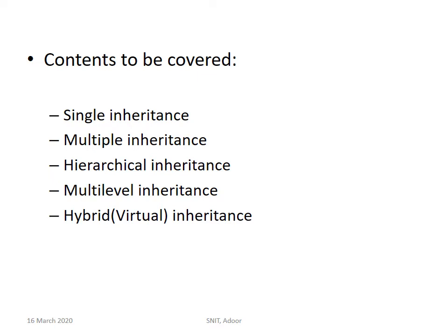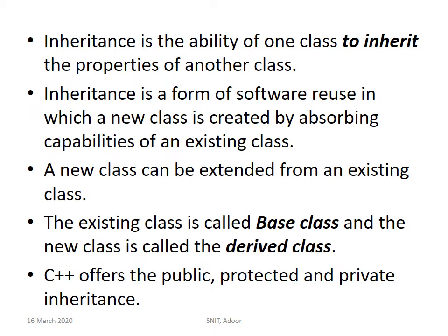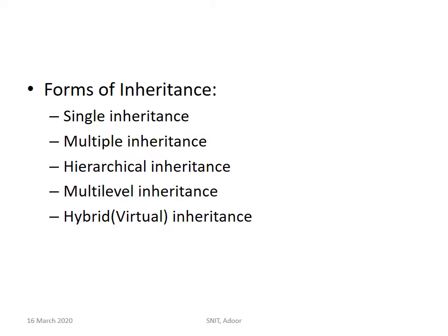In today's class we are going to learn what is single inheritance, what is multiple inheritance, hierarchical inheritance, multi-level inheritance, and hybrid inheritance. Inheritance is the ability of one class to inherit or absorb the properties of another class — the base class — and the new class is the derived class. Inheritance is a form of software reuse in which a new class is created by absorbing capabilities of an existing class. The existing class is called the base class, parent class, or super class, and the new class is called the derived class, subclass, or child class. Five forms of inheritance are there: single, multiple, hierarchical, multi-level, and hybrid. Hybrid is otherwise known as virtual inheritance.